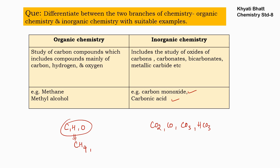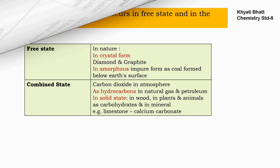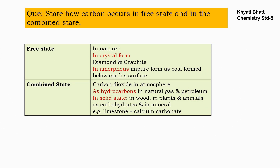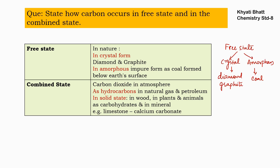Our next question is: state how carbon occurs in free state and in combined state. In free state, carbon occurs in two major forms in the Earth's crust — crystalline form and amorphous form. Examples of crystalline forms are diamond and graphite, and an example of amorphous form is coal.